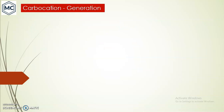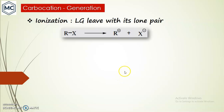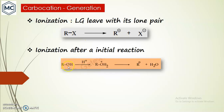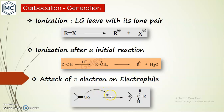How is a Carbocation generated? The first method is direct ionization, where a leaving group with high electronegativity leaves with its lone pair to form a Carbocation. The second method is ionization after an initial reaction — for example, in the case of an alcohol, it first gets protonated to form a hydronium ion, then ionizes to form a Carbocation. The third method is the attack of pi electrons on an electrophile, such as a proton, to form a Carbocation.